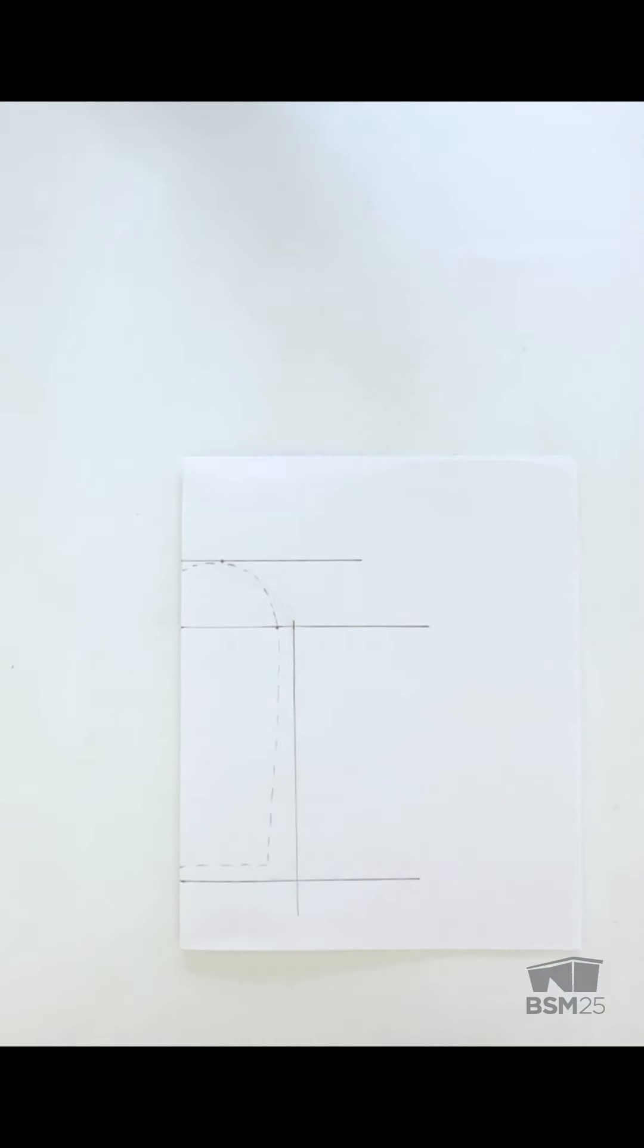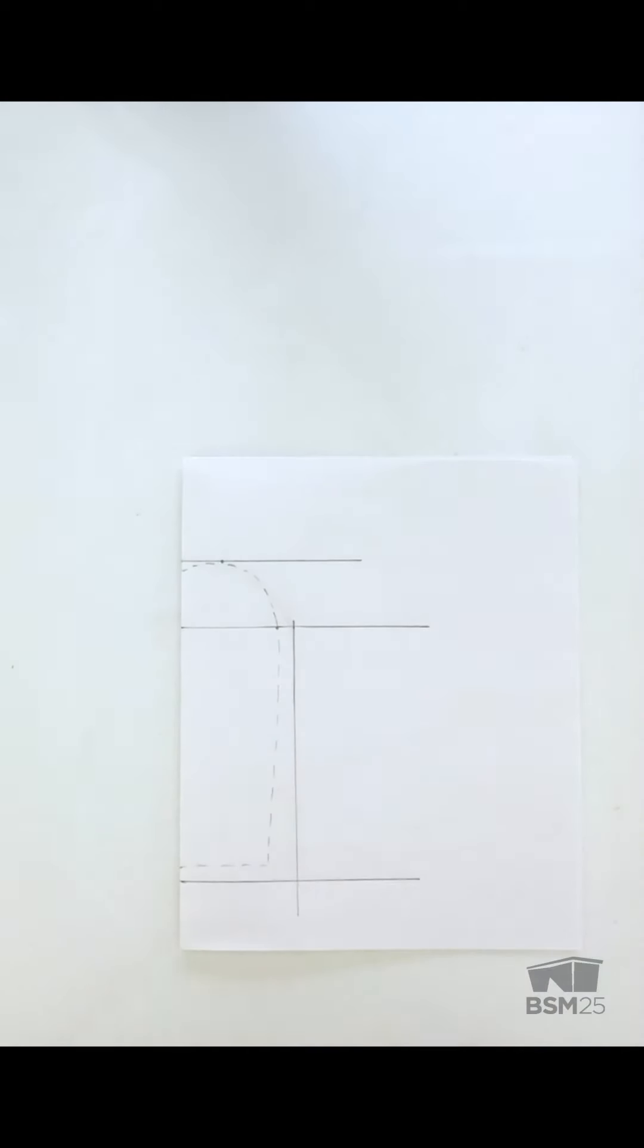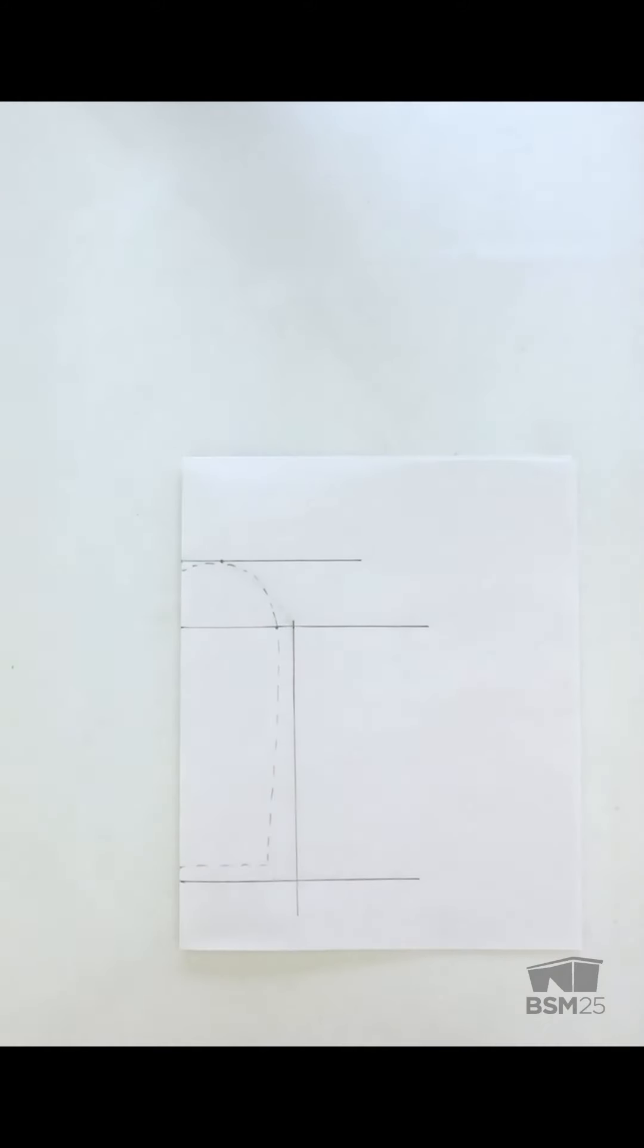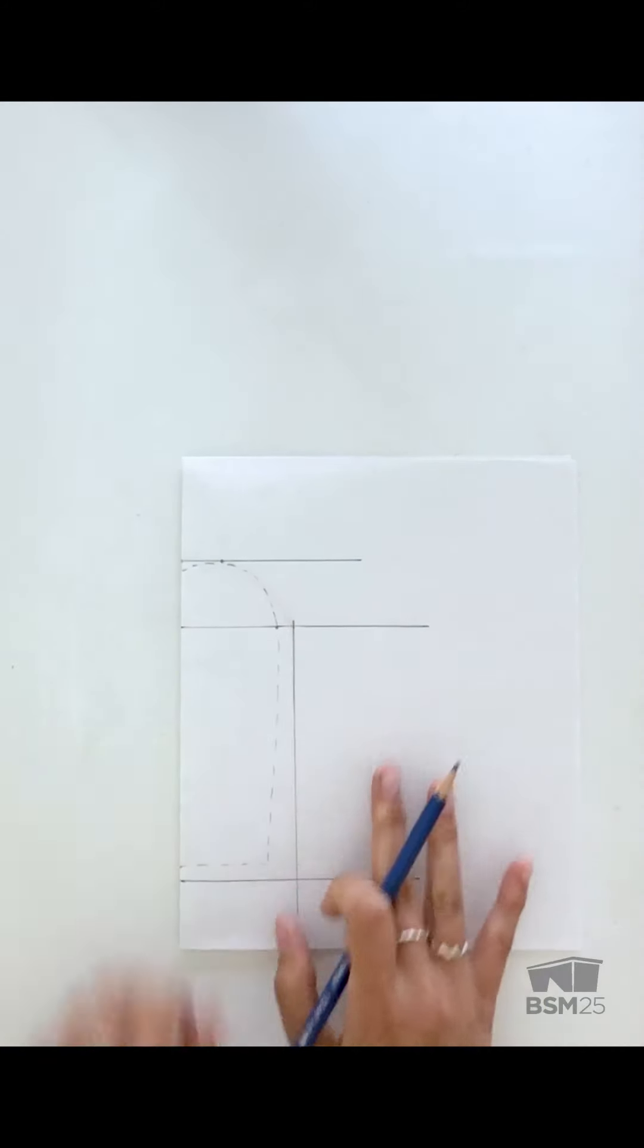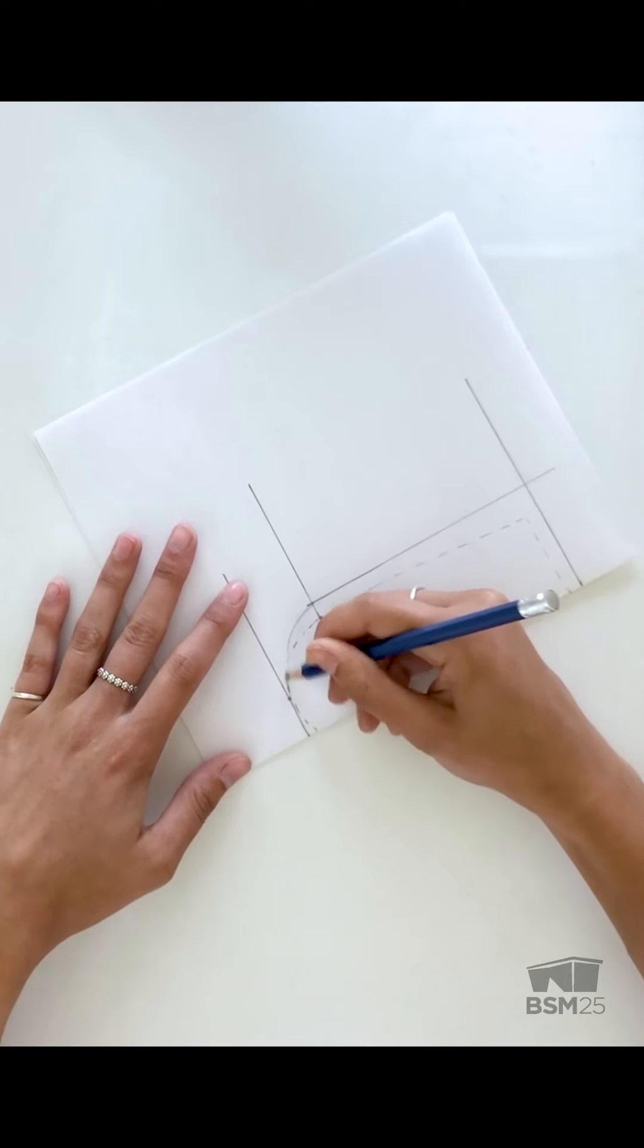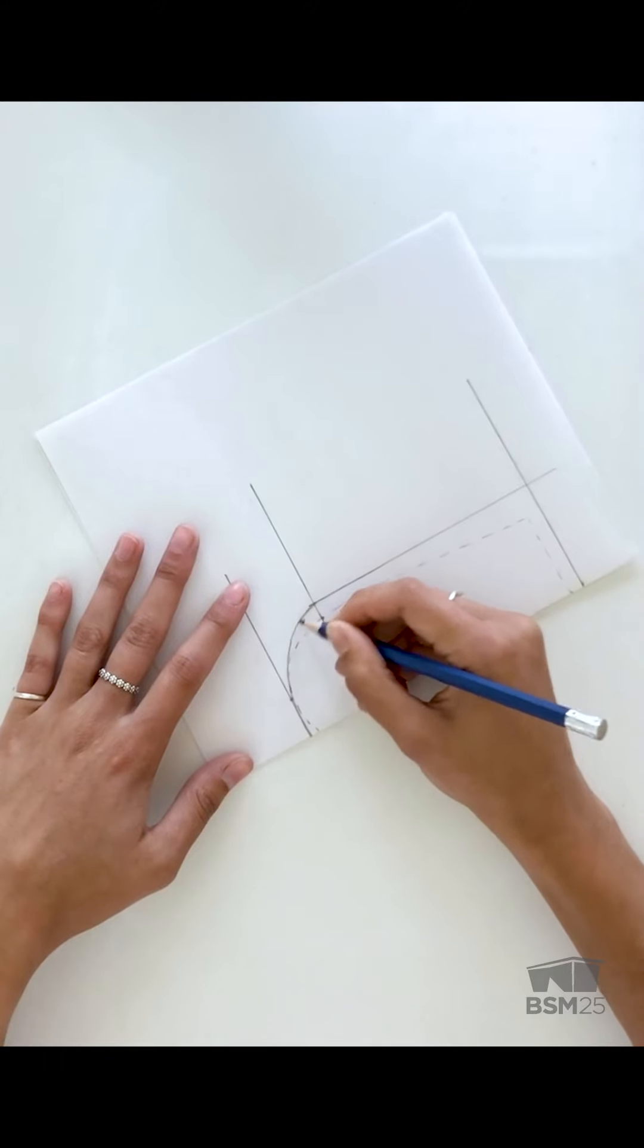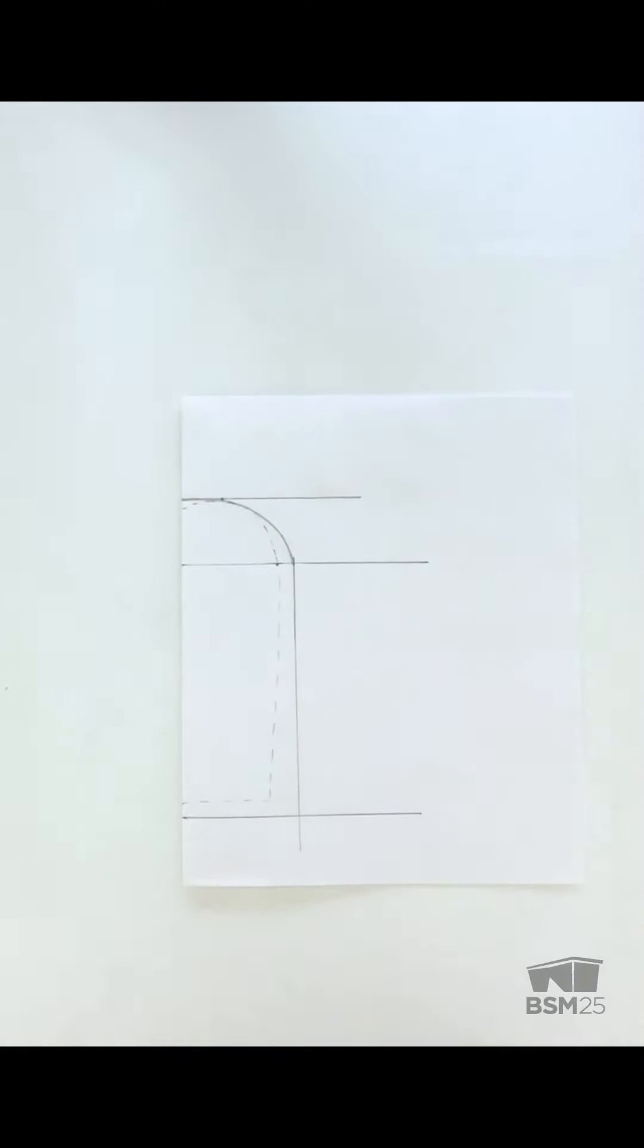Using a ruler, draw a vertical line from this tick mark here all the way down to the bottom. Now we're going to draw a nice smooth even curve from our center fold point back to this tick mark. When drawing this curve, it's okay if you cut off some of the dashed line.